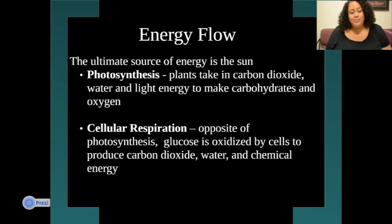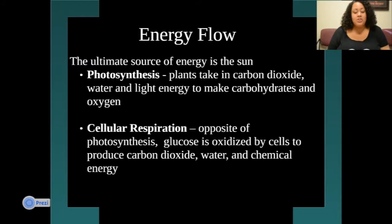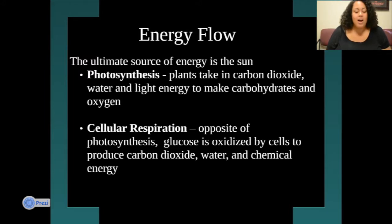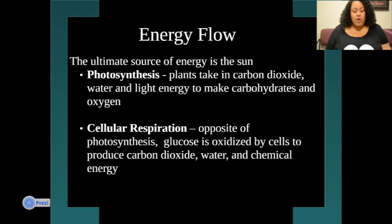Let's move on to energy flow. The ultimate source of energy is the sun — basically, it's the biggest thing. Photosynthesis is when plants take carbon dioxide, water, and light energy to make carbohydrates and oxygen. Cellular respiration is kind of the opposite of photosynthesis — it's when glucose is oxidized by cells to produce carbon dioxide, water, and chemical energy.